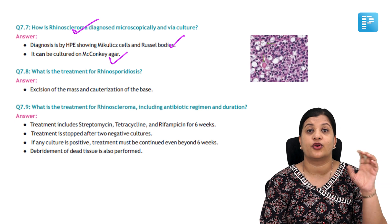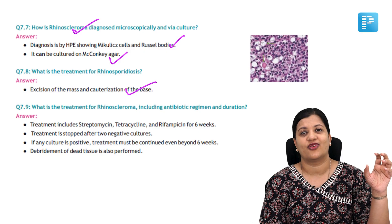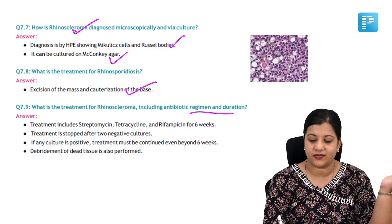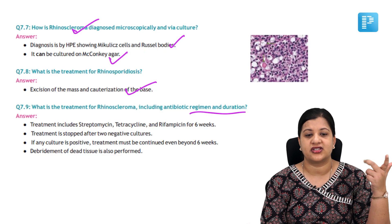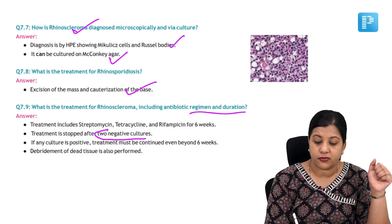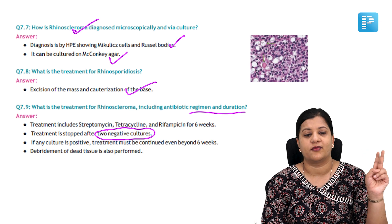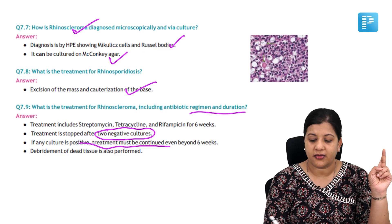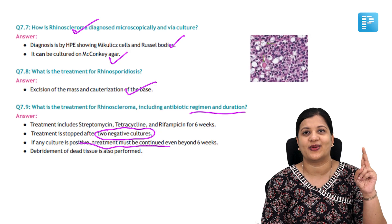What is the treatment for rhinosporidiosis? You excise the mass and cauterize the base — excision and cauterization of the base is very important. What is the treatment for rhinoscleroma — the antibiotic regimen and duration? We give streptomycin, tetracycline, and rifampicin for 6 to 8 weeks. When is treatment stopped? Treatment is stopped only when two subsequent cultures are negative. If the culture is still positive, treatment must be continued beyond 6 to 8 weeks until two cultures are negative.